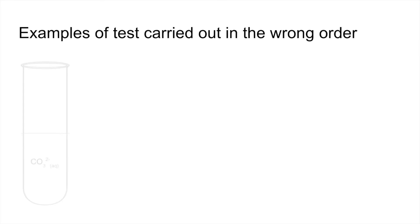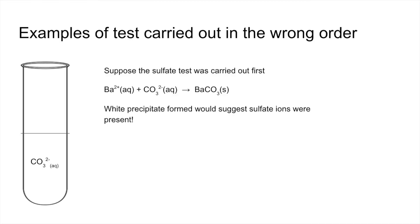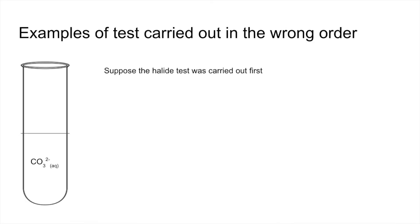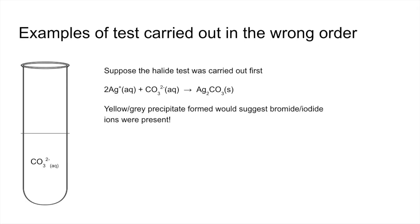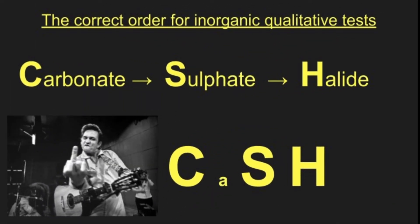Here are a couple of examples. Suppose there are carbonate ions in a mystery test tube and you carry out the sulfate ion test first: barium ions are added, they react with the carbonate ions, and you get a white precipitate of barium carbonate — you would think that meant sulfate ions were present, but it's actually the carbonate ions causing the precipitate. Now suppose the halide ion test was carried out first: silver ions are added, they react with the carbonate ions, and you get that yellow-gray precipitate of silver carbonate, which would make you think you had bromide or iodide ions present due to the colour. Hopefully you can see from those two examples that it's really important to carry out the anion tests in the correct order.